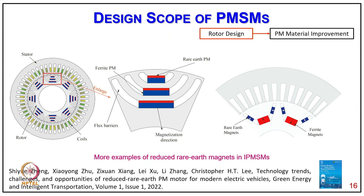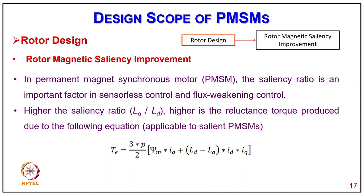Coming to rotor magnet saliency improvement, in permanent magnet synchronous motors, saliency is an important factor in sensorless control and field weakening control, especially for electric vehicle applications. Higher saliency (Lq/Ld ratio) produces higher reluctance torque per the equation: T = (3/2)p[φm·Iq + (Ld − Lq)·Id·Iq]. Since Lq is greater than Ld, introducing positive Id reduces the net flux for field weakening, while negative Id increases flux during starting, allowing constant power characteristics over a wide speed range.